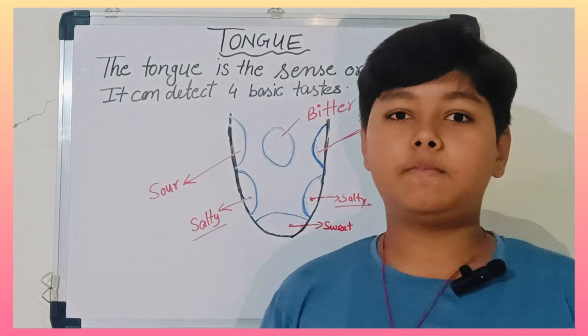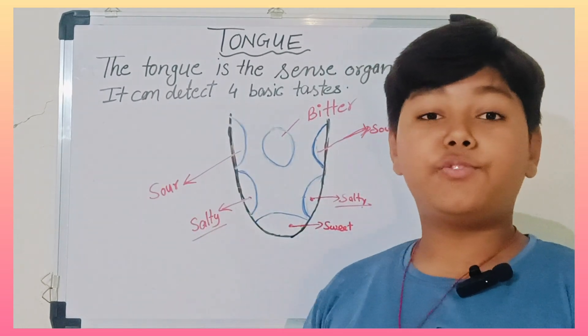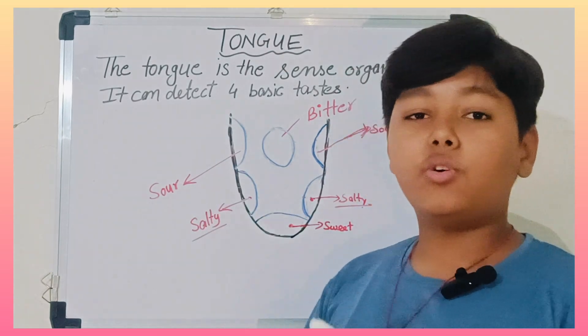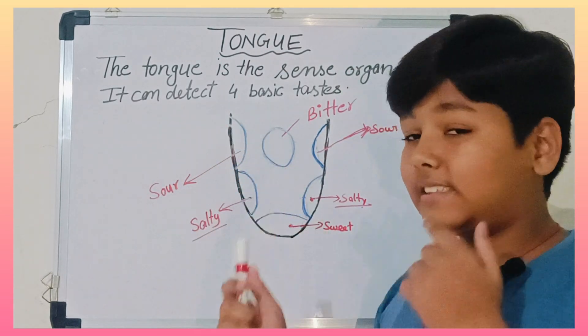Then after that sour. Citrus foods are the most good examples of sour things. So they are located in the side.